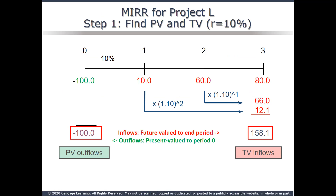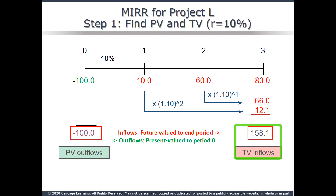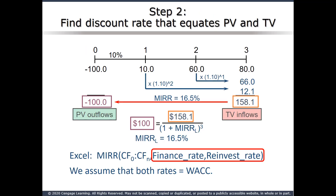Our first step is to find the future value of all inflows — all positive cash flows. Note that the TI Business Analyst 2 does not solve for the future value of an uneven cash flow stream, but it's easy to find in your calculator, as covered in the MIRR video tutorial. Cash flow 1 of $10 is future valued 2 years, equal to 10 times 1.10 squared. The $60 is future valued 1 year, and $80 is already at the end of the timeline. These are added together to find the terminal value. We need to find the discount rate that will grow the $100 outflow at time 0 to the terminal value of inflows of $158.1.